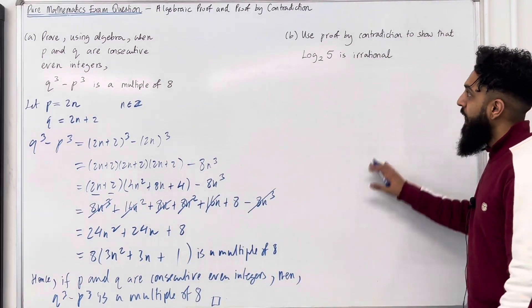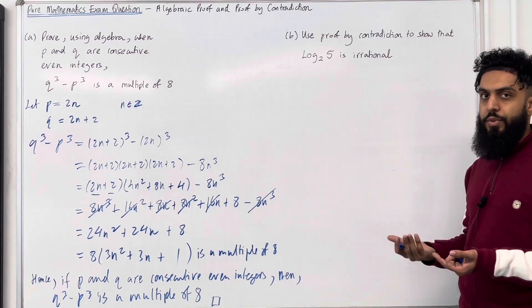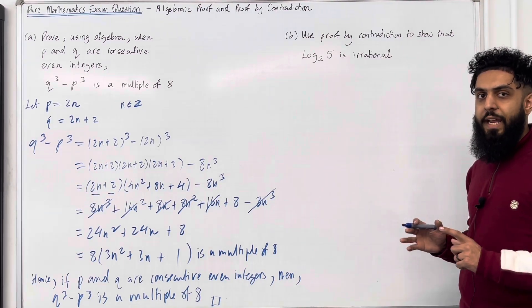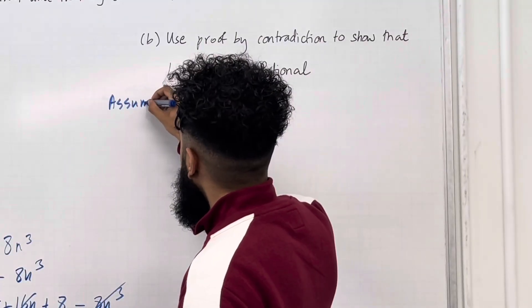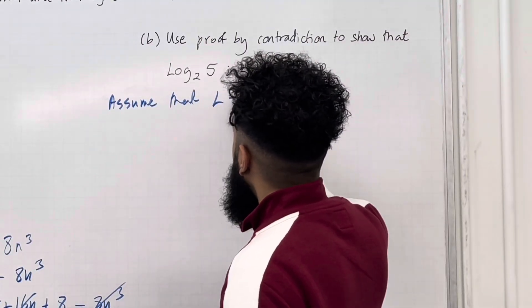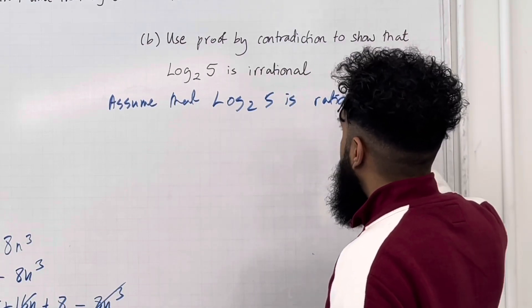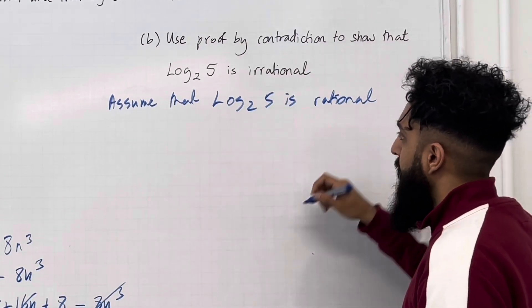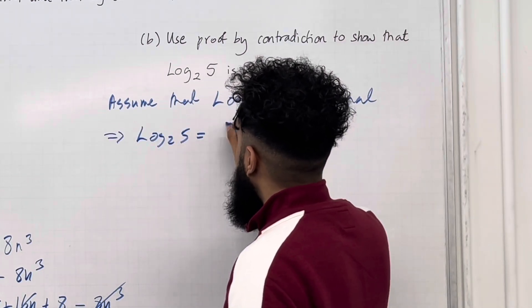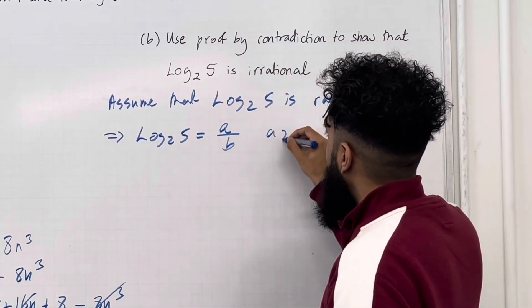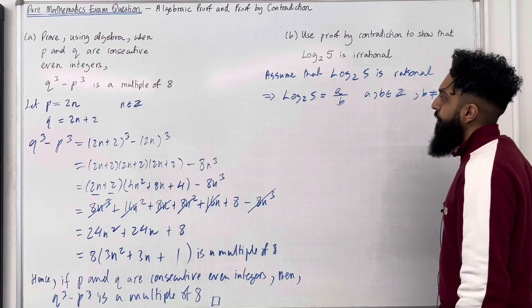Let's move on to part B. Use proof by contradiction to show that log base 2 of 5 is irrational. We must start off with the negation statement. So assume that log base 2 of 5 is rational. This implies that log base 2 of 5 equals A over B, where A and B are integers, B is not equal to 0.